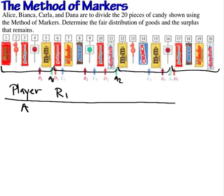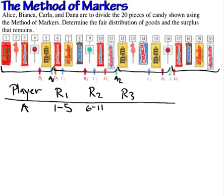The fair share for Round 1 — R1 — is items 1 through 5. For Round 2, Player A will accept items 6 through 11. For Round 3, Player A will accept items 12 through 16. And for Round 4, Player A will accept items 17 through 20.